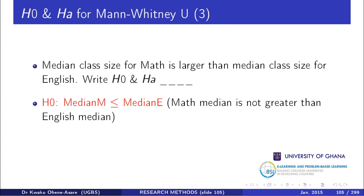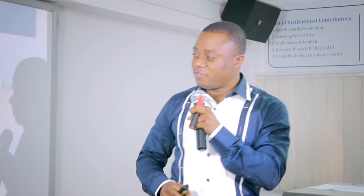The null says: the median for the Math class is less than or equal to the median for the English class — meaning Math median is not greater than English median. The alternative says the median for Math is greater than that for English. The same principle applies, but this time with two word samples.